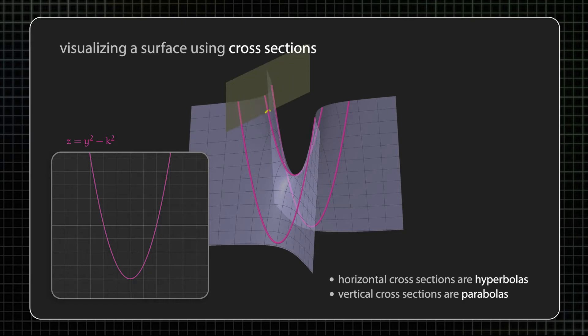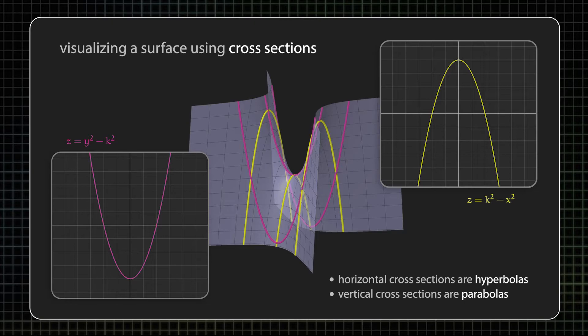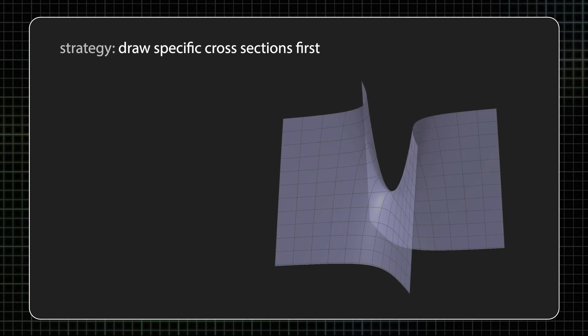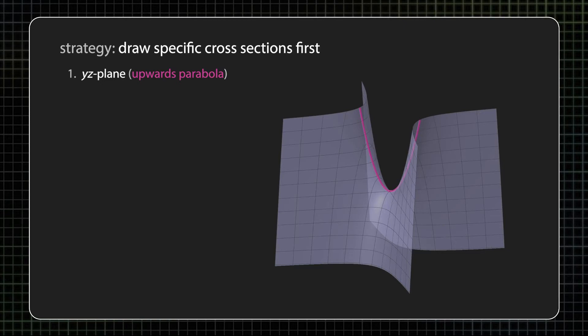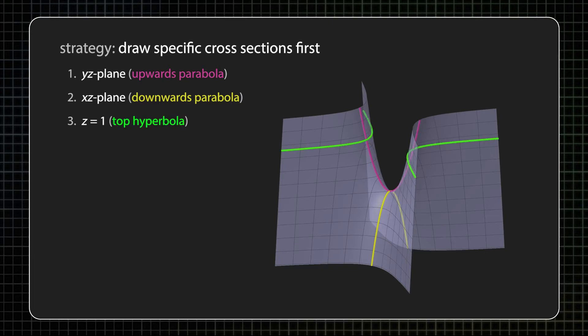We get an upwards cupping parabola or a downwards cupping parabola based on whether we choose a plane that's parallel to the y-z plane or the x-z plane. So some of the cross sections are hyperbolas and some are parabolas, hence the name hyperbolic paraboloid. My strategy for drawing one of these things is to pay attention to some of the cross sections: the vertical cross section with the y-z plane, the cross section with the x-z plane, and then a horizontal cross section above the x-y plane and one below the x-y plane.